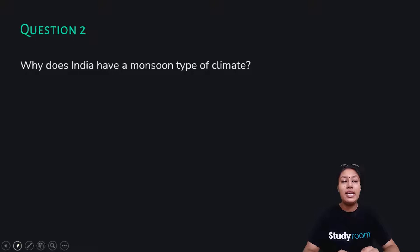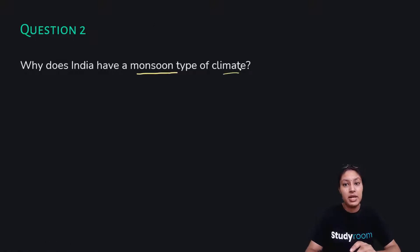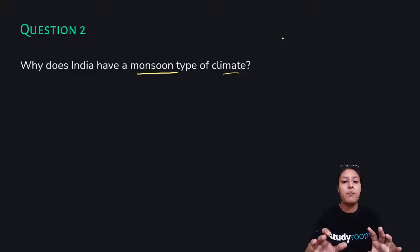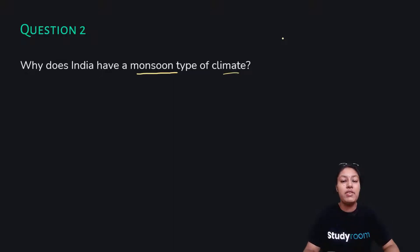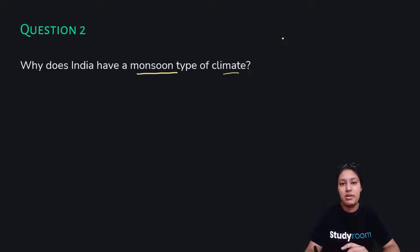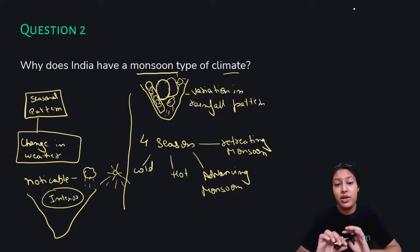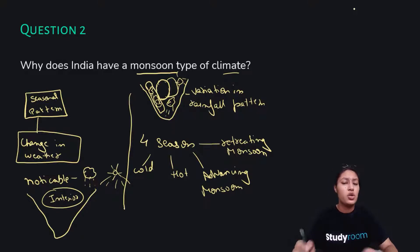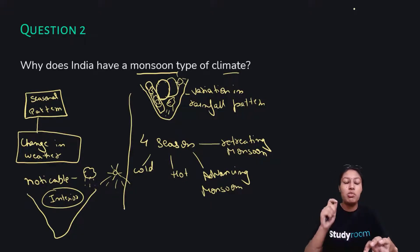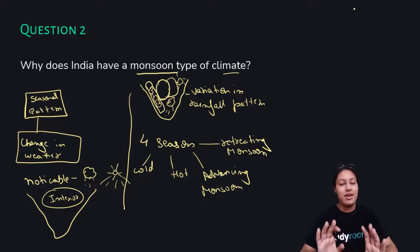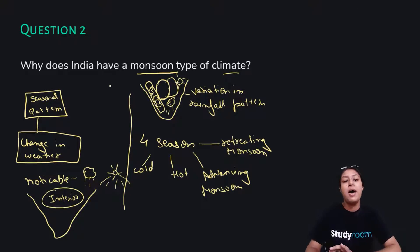Next, question number two: why does India have a monsoon type of climate? First, let me explain why we call it monsoon type. It rains all over India — it depends on how many centimeters it rains, whether rainfall is heavy or low, but it does rain all over India at some point in 12 months. That's why India is known as monsoon type climate. As a pro tip, whenever you find it difficult to learn an answer, don't cram it — try to understand it by drawing images, because images stay in your head forever.